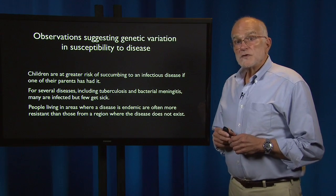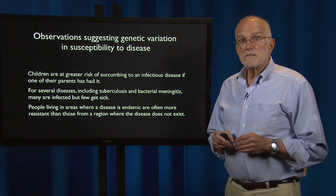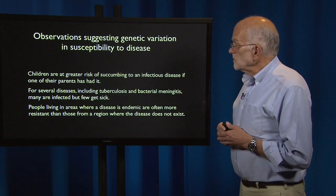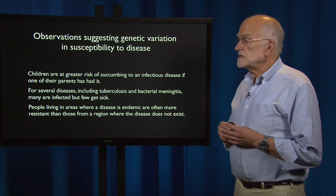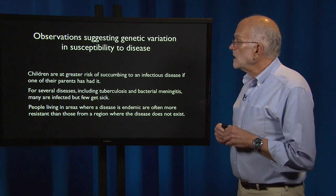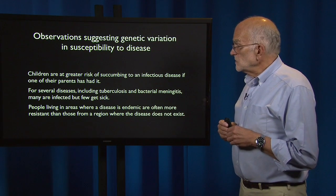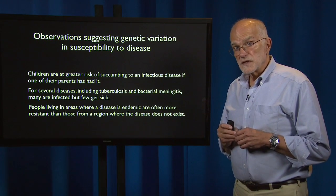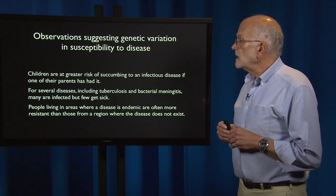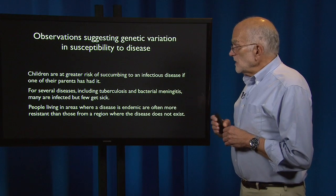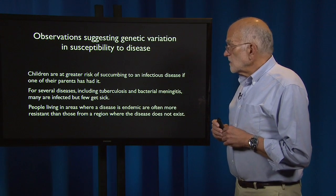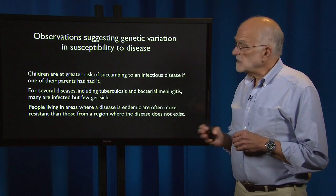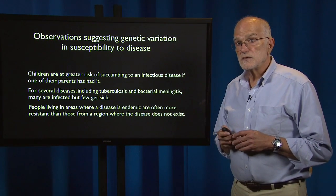There were observations quite a while back that suggested that people vary genetically in their susceptibility to disease. Children are at greater risk of succumbing to an infectious disease if one of their parents had it. For several diseases that include TB and bacterial meningitis, many are infected but few get sick, so some are resistant. People living in an area where a disease is endemic are often more resistant than those in a region where the disease doesn't exist, indicating that there's some local adaptation to disease.